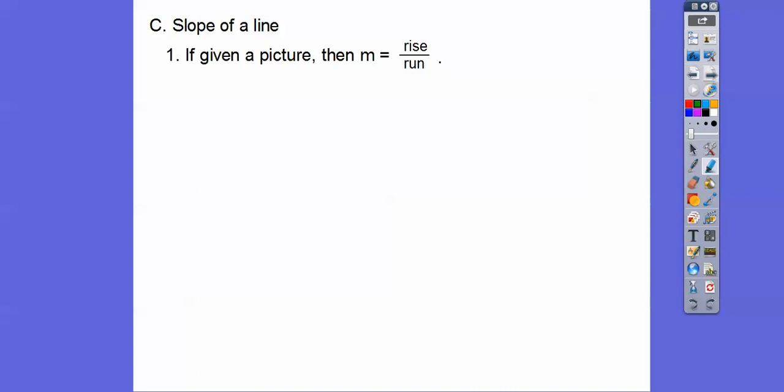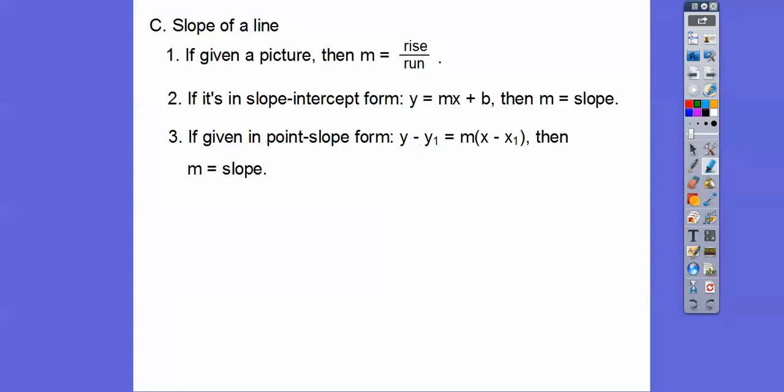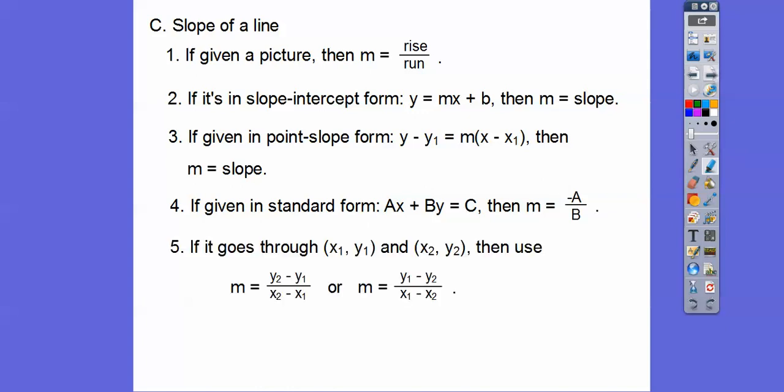So slopes of a line. If it's given a picture, we just do that rise over run like we just did. If it's in slope-intercept form, then the number that's in front of your x is your slope. And if it's in point-slope form, then the m that's in front of your parentheses, x minus x sub 1, is also your slope. Standard form, ax plus by equals c, then it's opposite a over b.